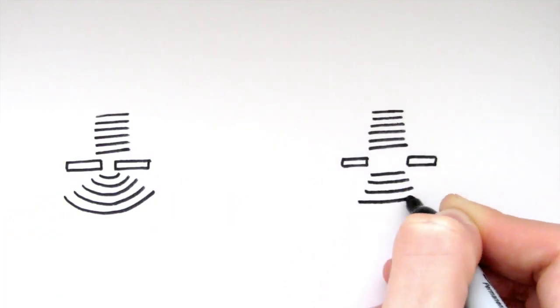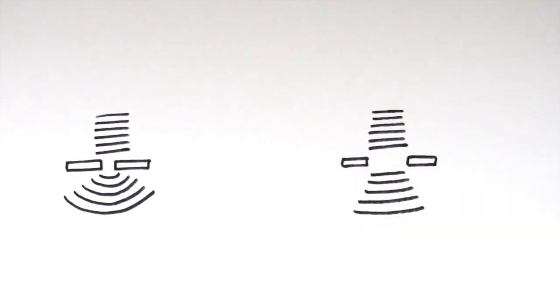When waves meet a gap in a barrier, they carry on through the gap. However, the waves spread out to some extent into the area beyond the gap. This is called diffraction.